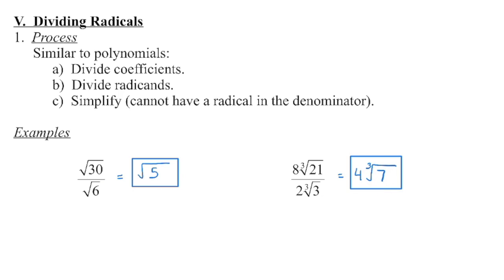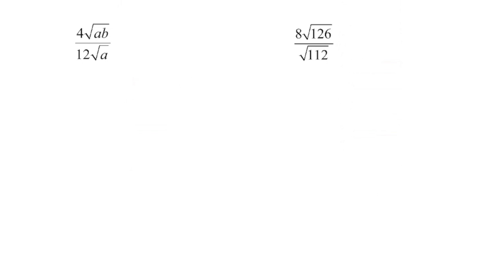Each of those is completely simplified. In our next example, we now have variables in the radicand, so we need to state the restriction on those variables before we proceed. Because we are dividing by the square root of a, normally we would say a has to be greater than or equal to 0. However, a cannot equal 0 because it's in the denominator — we cannot divide by 0. So in this case, a has to be greater than 0.